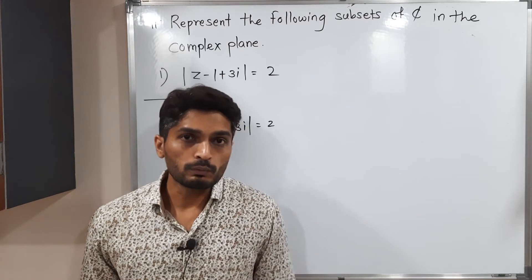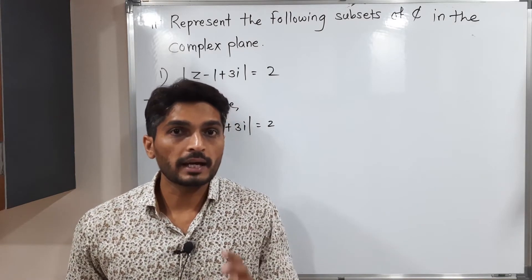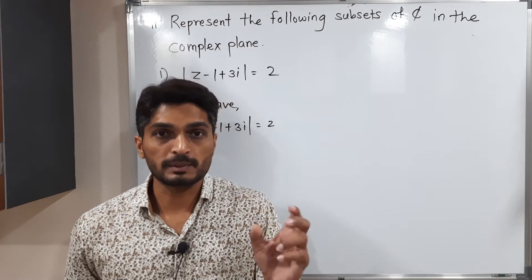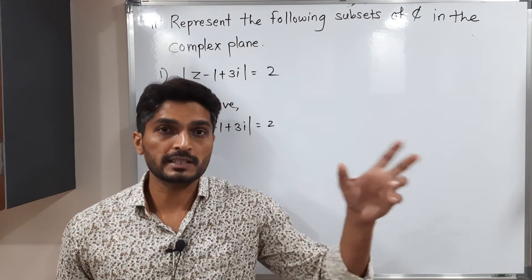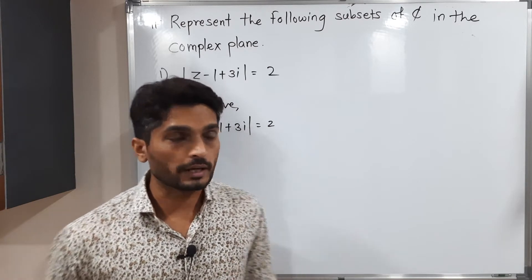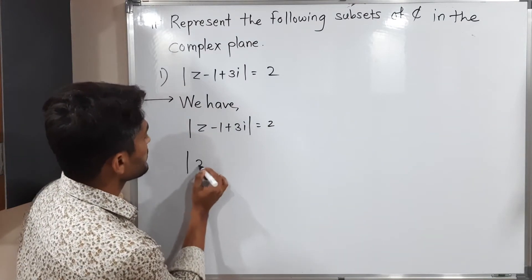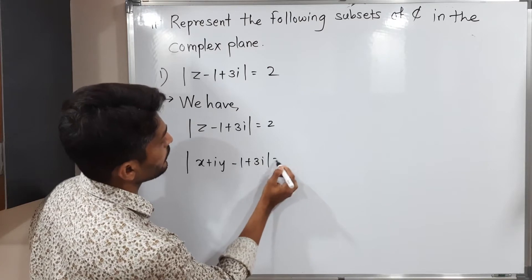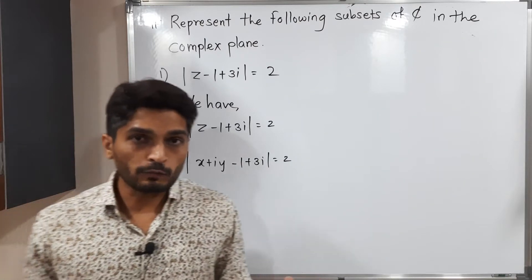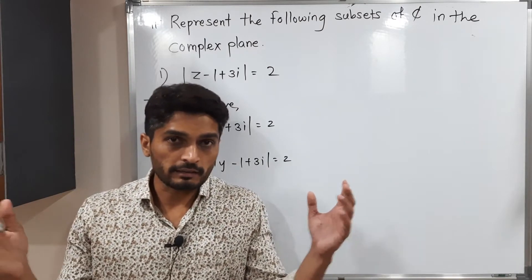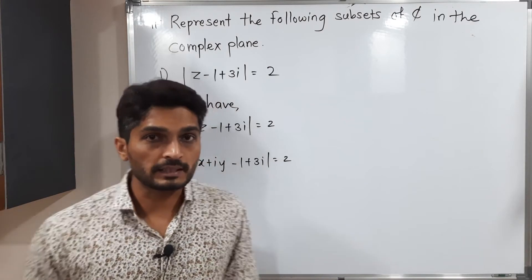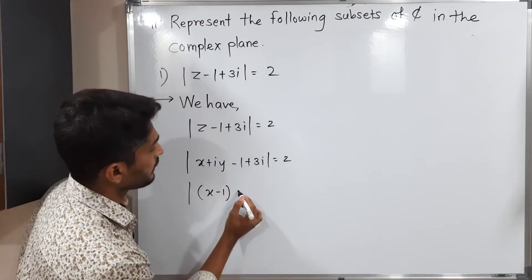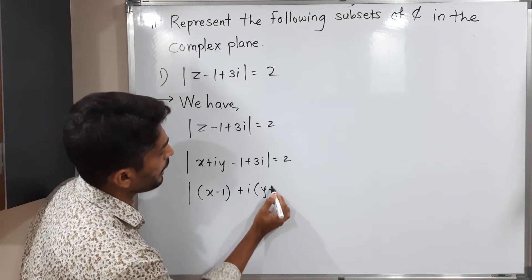What we will do is replace Z by x + iy. Z can be expressed as x + iy — real part plus i times imaginary part. So I am putting Z = x + iy: mod(x + iy − 1 + 3i) = 2. After that I will collect the real part and the imaginary part. Real part is x − 1, and taking i common the imaginary part is y + 3.